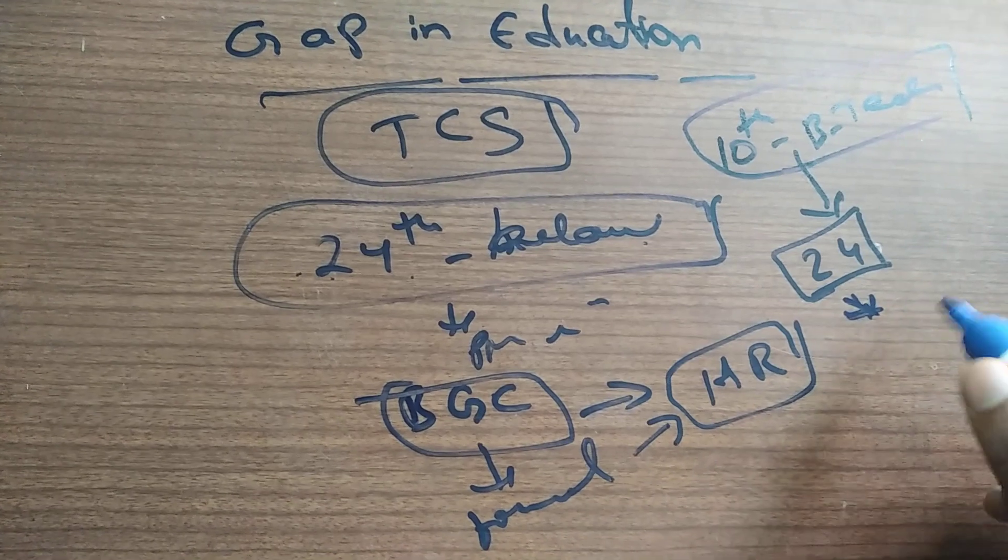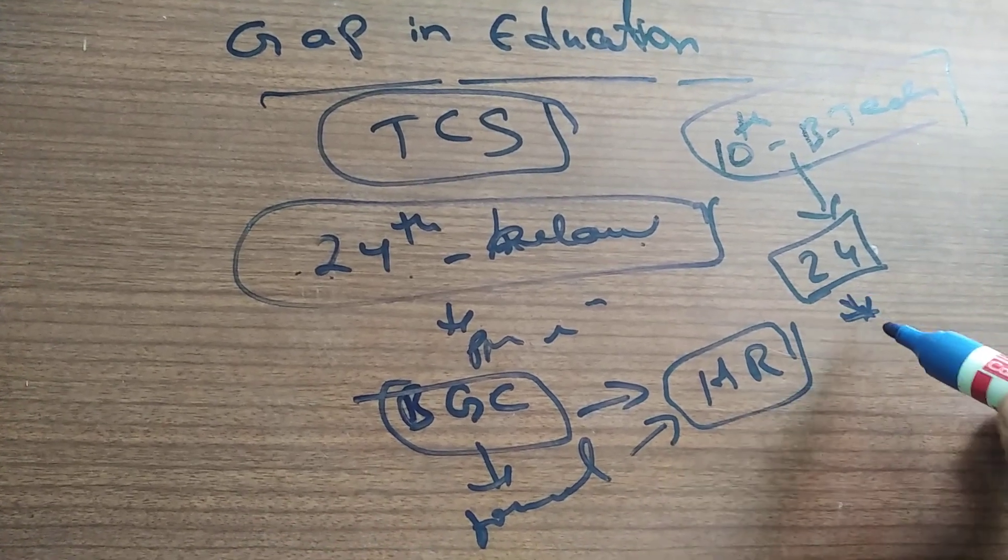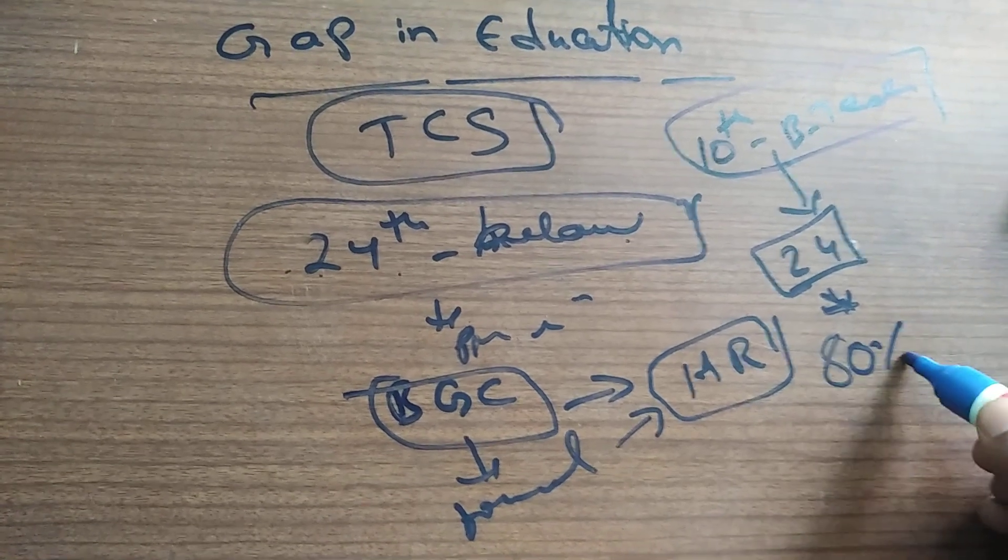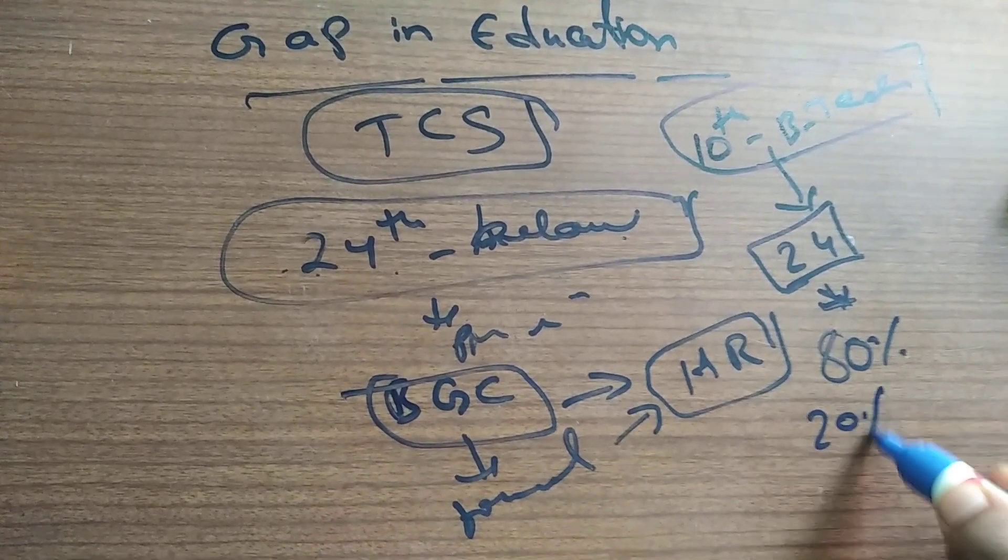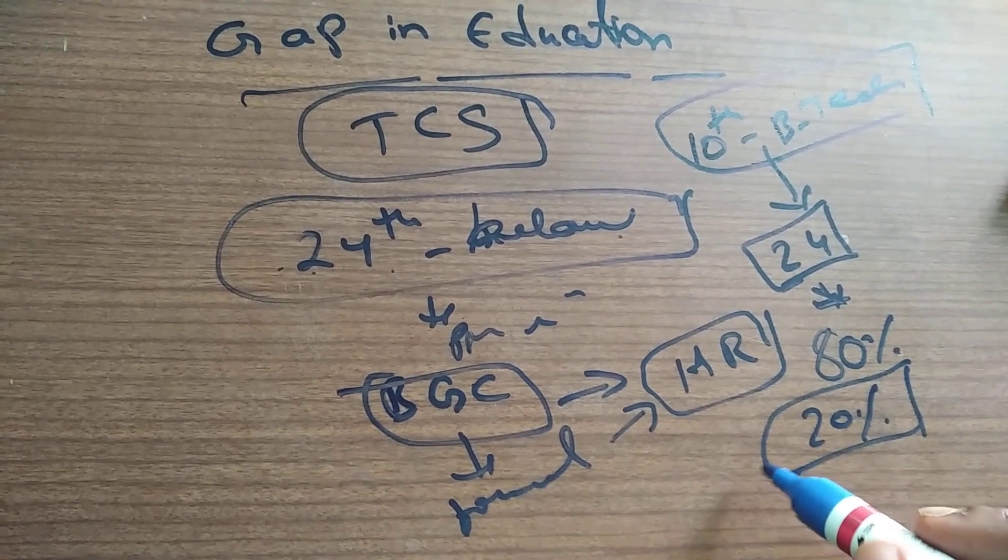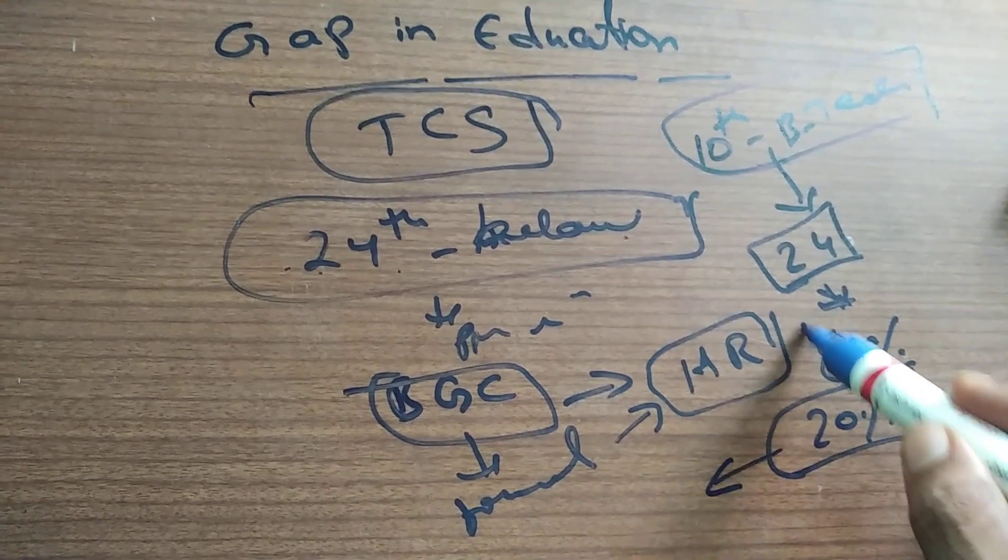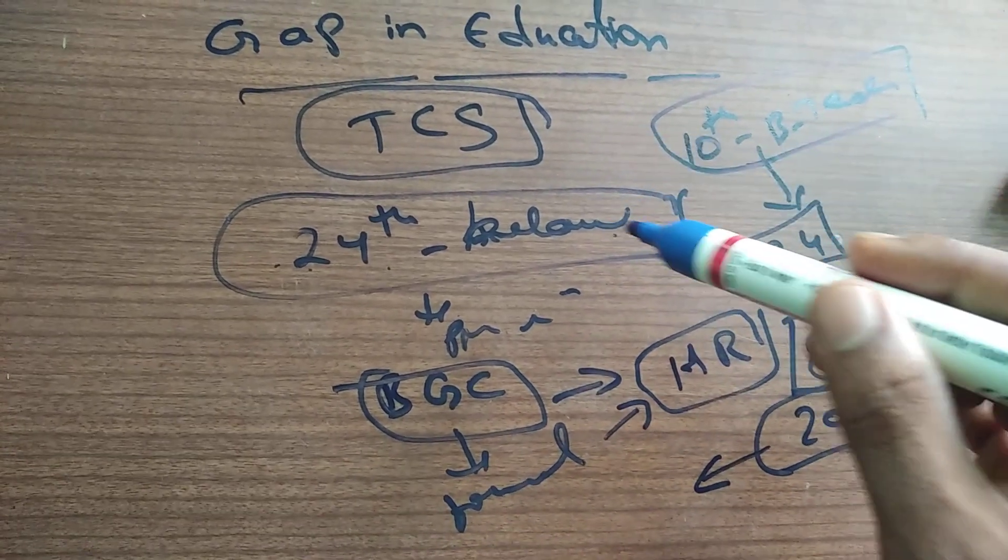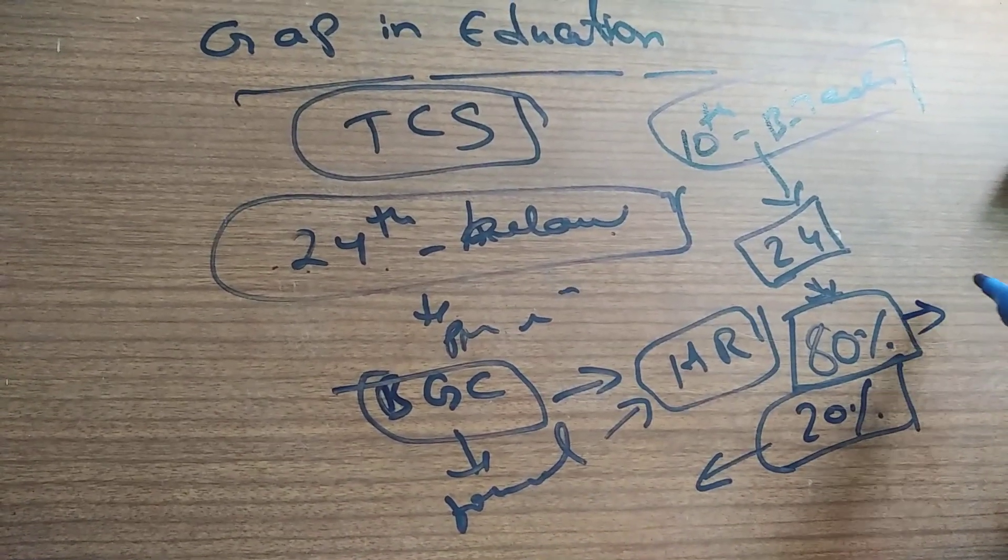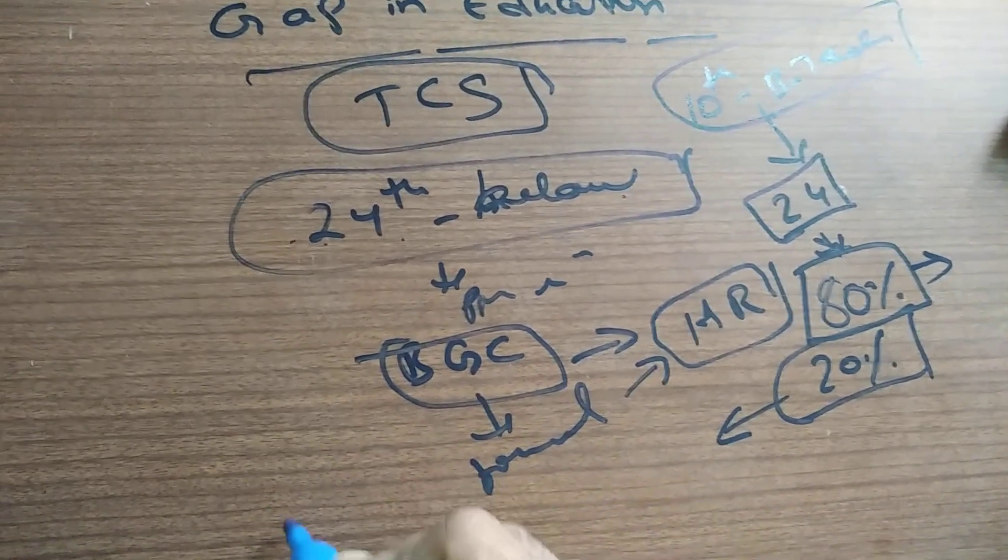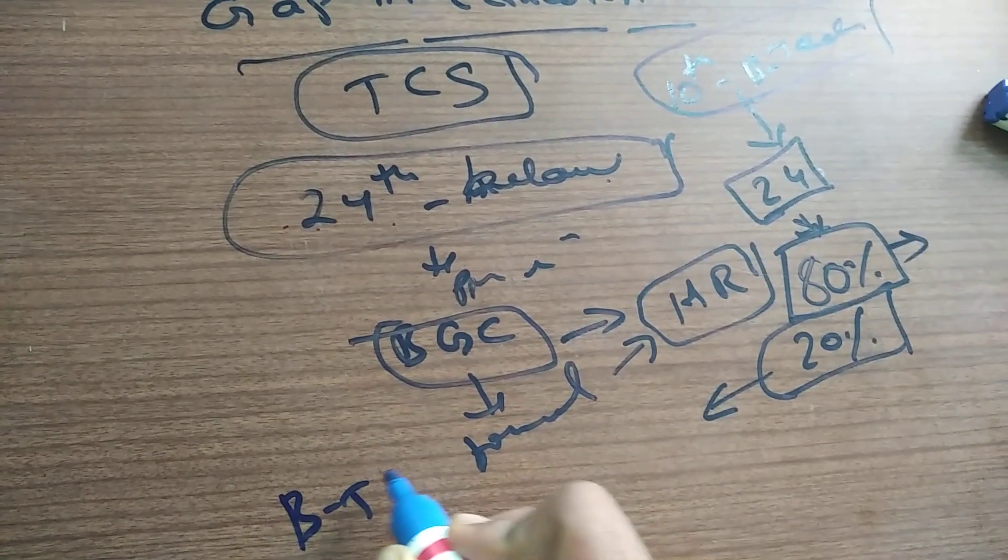24 months below gap will be acceptable in TCS if you provide proper certificate and if you convince the HR in a way that explains the particular reason for the gap. There will be an 80 percent chance to get in and 20 percent chance of rejection, because TCS won't accept mostly, but if you have a proper certificate explaining the kind of issue during that time period, and if TCS accepts you, you're a lucky person guys.